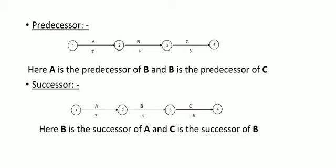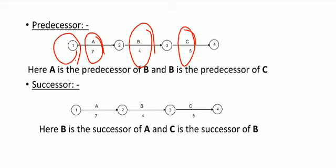What is predecessor? Three activities A, B, and C. Activity starts at node 1, B activity starts at node 2, C at node 3, and node 4.